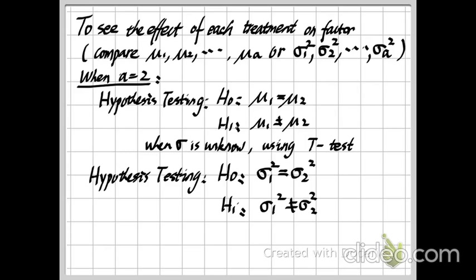The F test is still a hypothesis test. In our previous video about hypothesis testing, we already talked about the steps. First, we construct a test statistic, then based on its value we compare it with our critical region, and we can reject or fail to reject H0. In this video, we will talk about how to construct the F statistic for the F test.